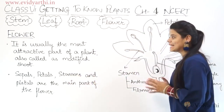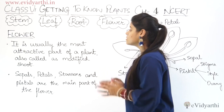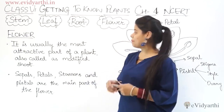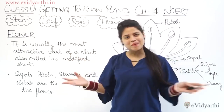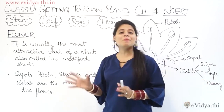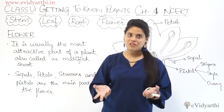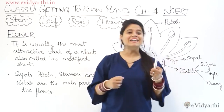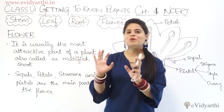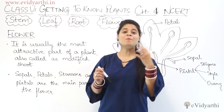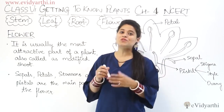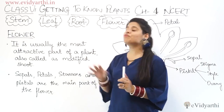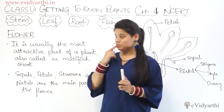It is usually the most attractive part of a plant, also called a modified shoot. We all know what a flower is. The flower is the most attractive part of a plant. Especially if you have a rose plant, the leaves will be okay, but the flower will bloom.